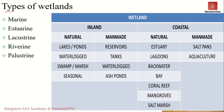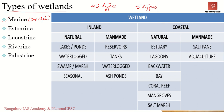According to the Ramsar Convention, wetlands can be classified into 42 types. However, for our discussion we will restrict this to around five major types. The first is marine wetlands — coastal wetlands which include coastal lagoons, rocky shores and coral reefs. The second is estuarine wetlands, which include deltas, tidal marshes and mangrove swamps — found along the river mouth.